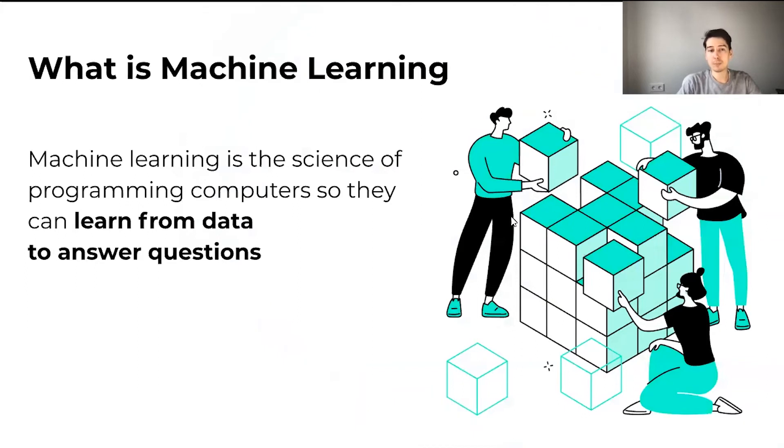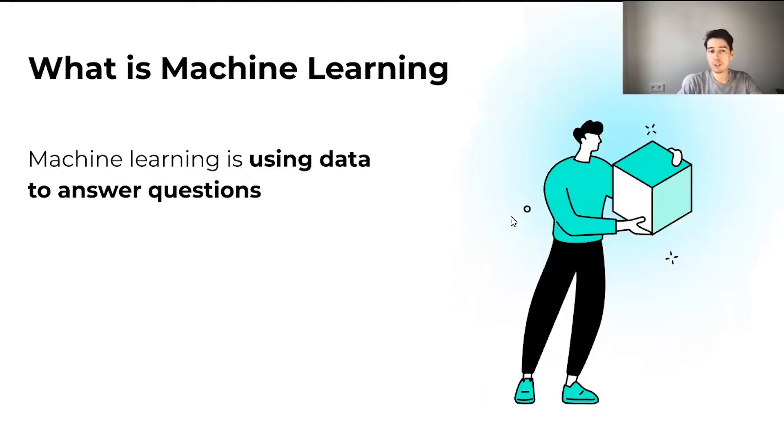So, what is machine learning? Machine learning is a science of programming computers so they can learn from data to answer questions. We can simplify this definition and say that machine learning is using data to answer questions. Of course, this is not a scientific definition, but this is a useful framework for us to think about how we should approach machine learning.